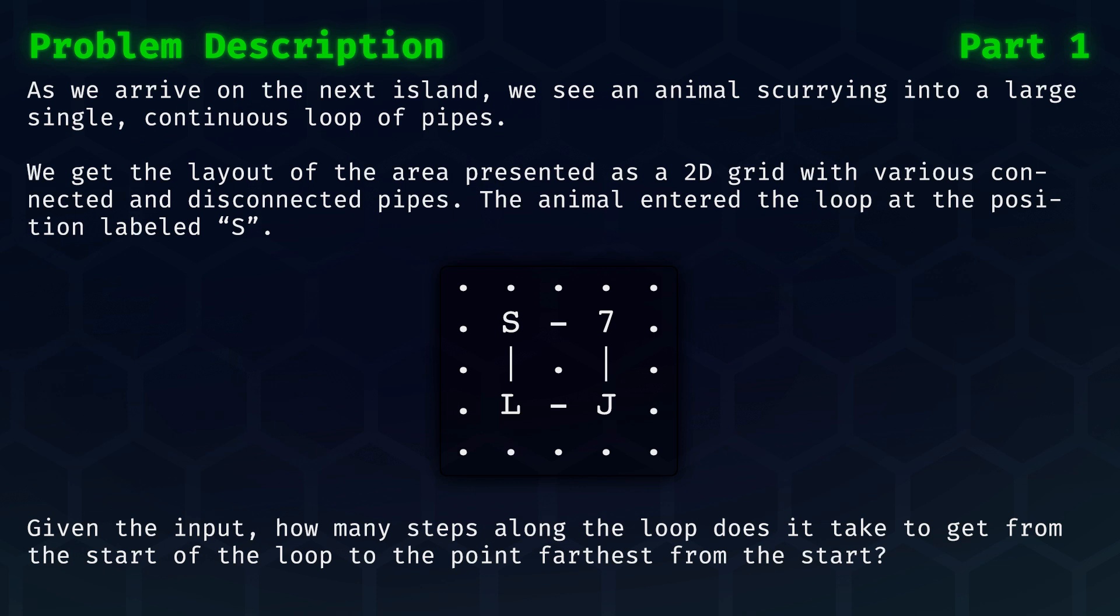We get the layout of the area presented as a 2D grid with various connected and disconnected pipes. The animal entered the loop at the position labeled with the letter S. Given the input, how many steps along the loop does it take to get from the start of the loop to the point farthest from the start?